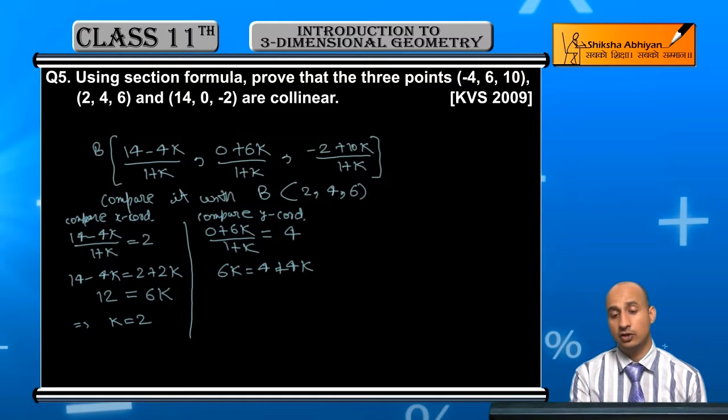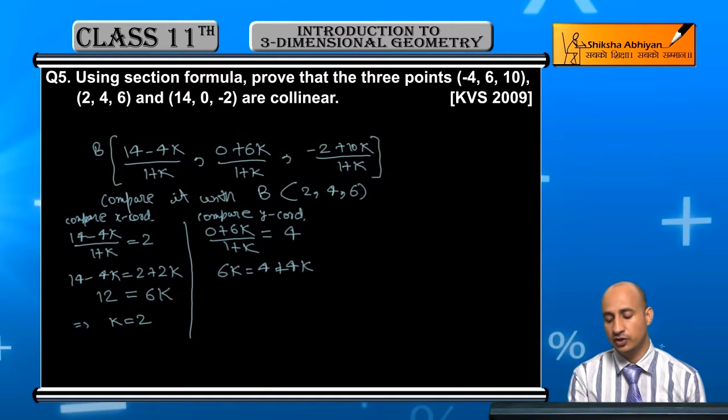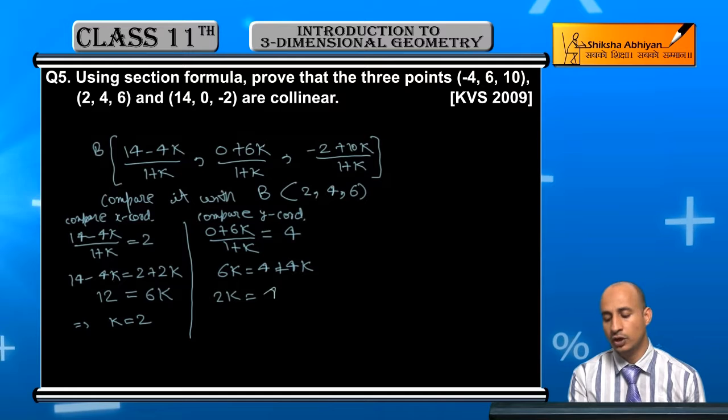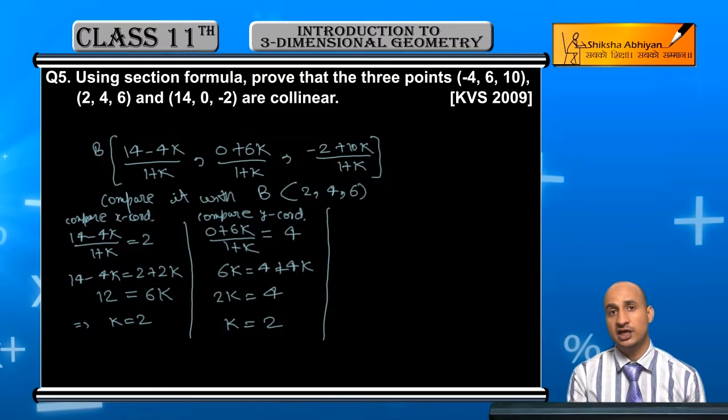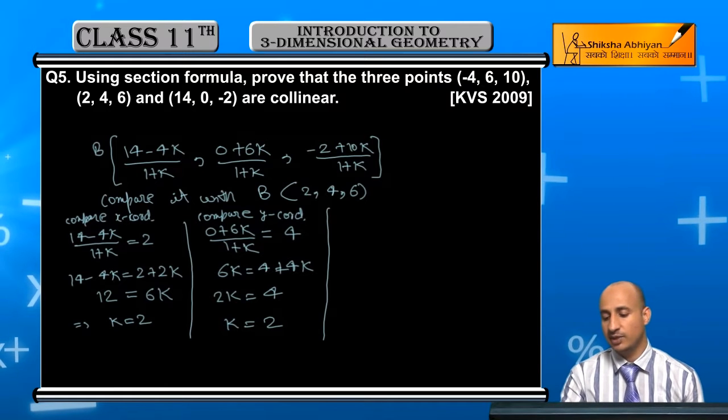Now I take 4k to the left, so 6k minus 4k is 2k. 2k is equal to 4. So here also k is equal to 2. So compare when x coordinate k's value came the same.